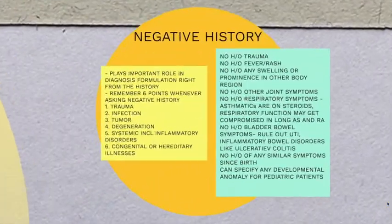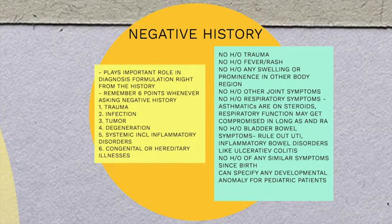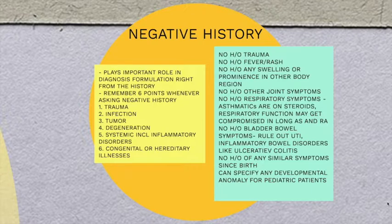Negative history is equally important because it helps in formulation of the diagnosis from the history. Remember these points when asking for negative history: you have to rule out trauma, infection, tumor, degeneration, systemic illnesses which include inflammatory disorders as well, and congenital or hereditary illnesses. On the right side, you can see an example of how a negative history can be written or told to the examiner.